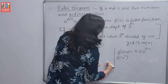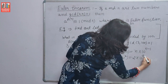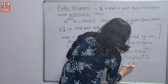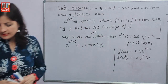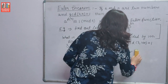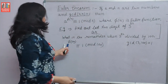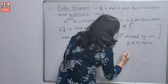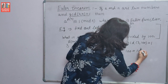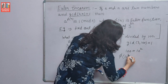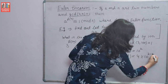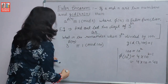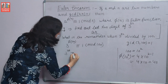Here n is 2, so phi(100) = phi(10²) = 2 × 10^(2−1) = 2 × 10 = 40. So 3 raised to the power 40 is congruent to 1 modulo 100.